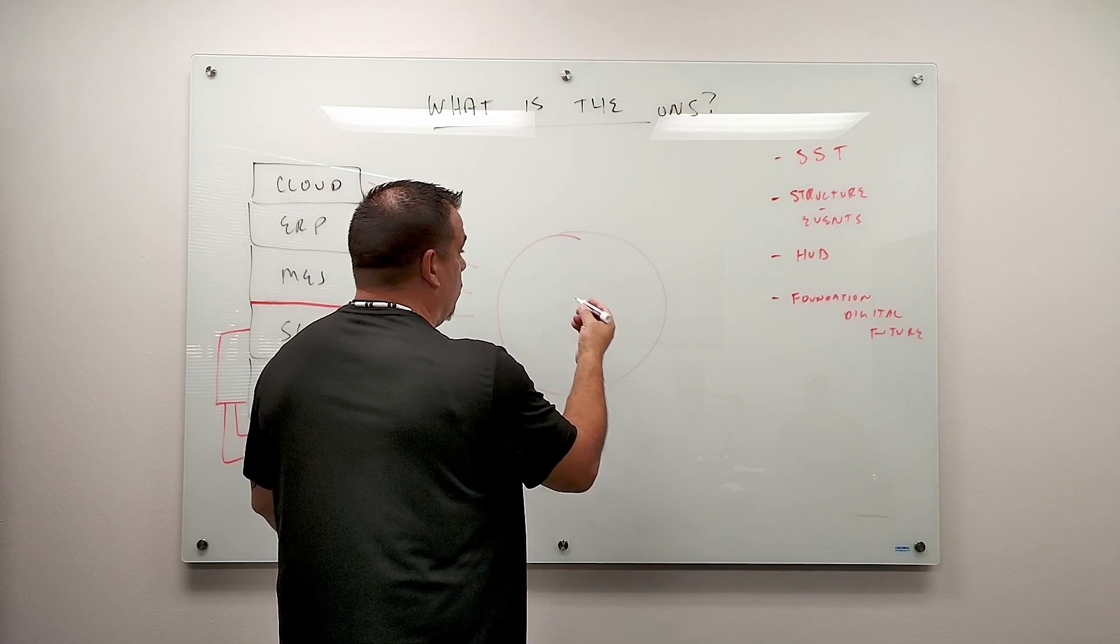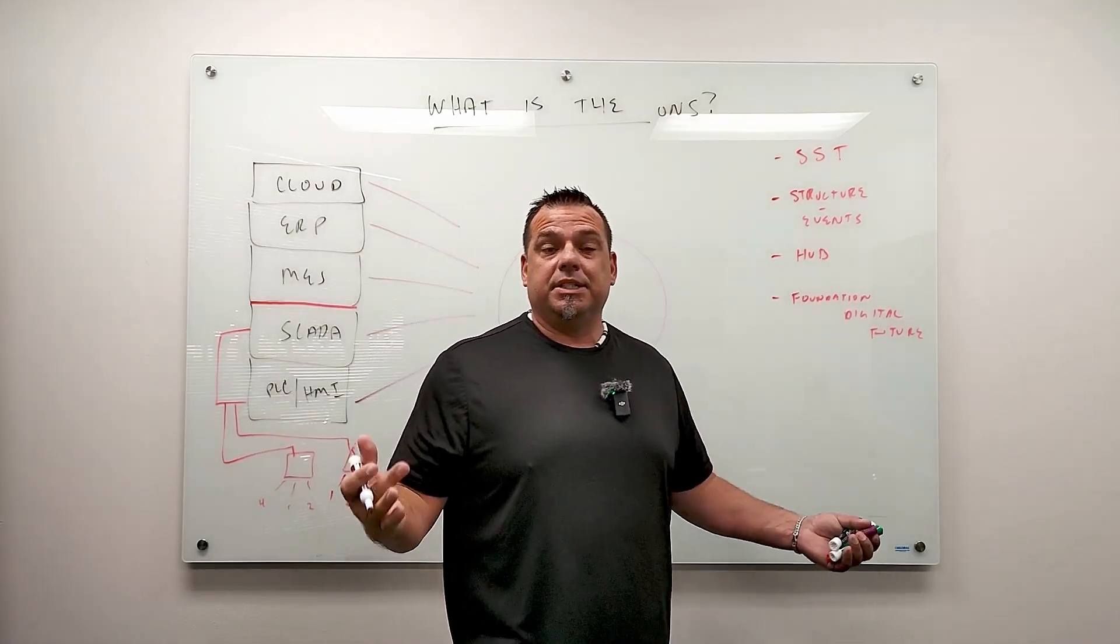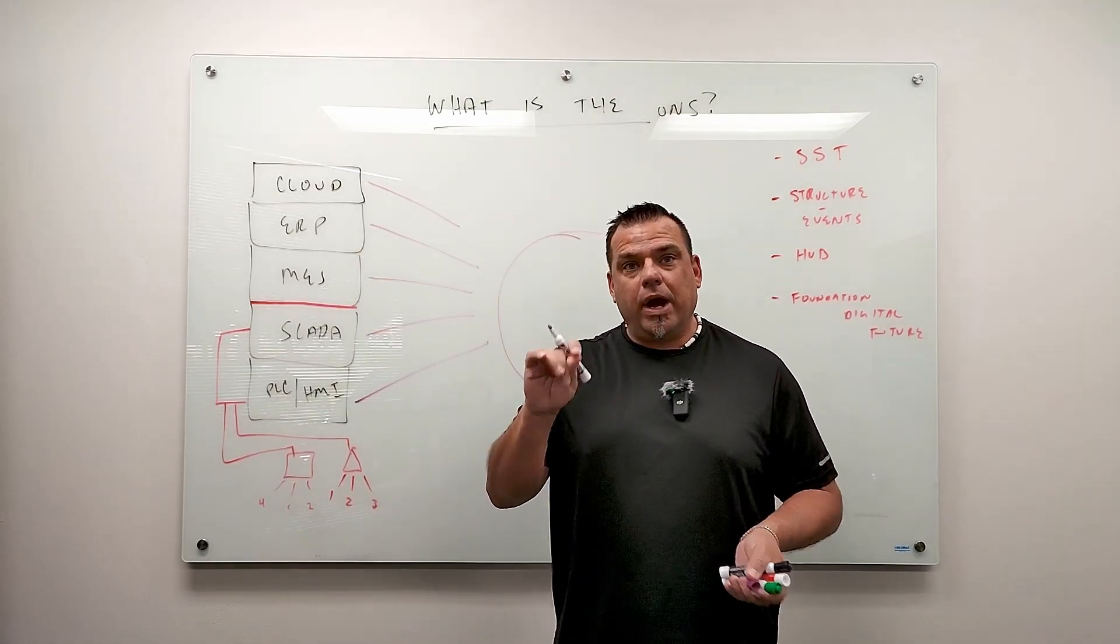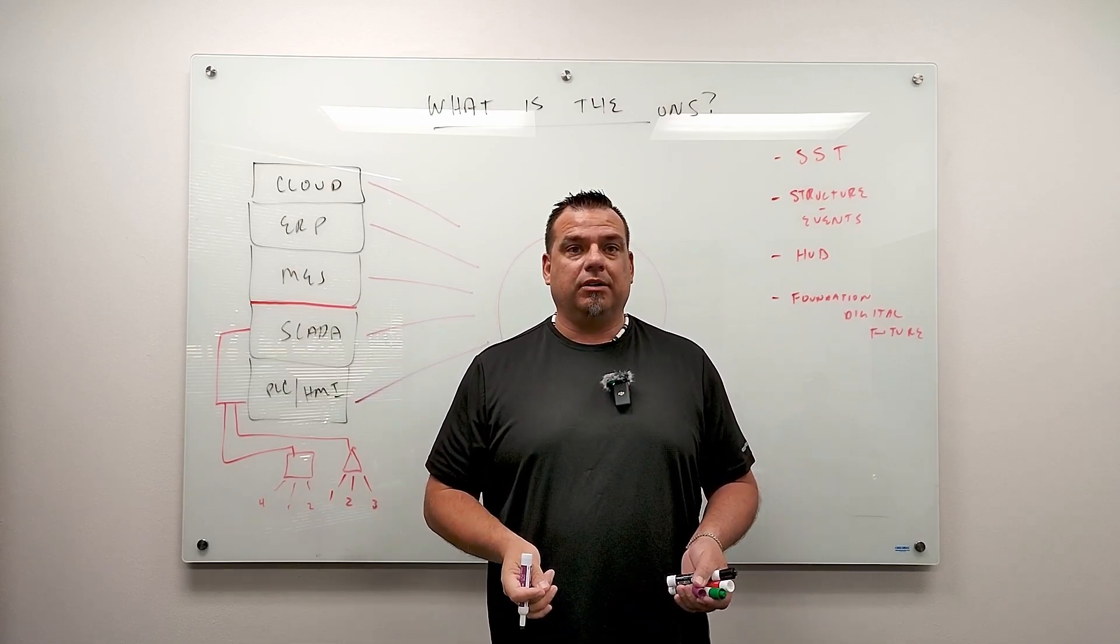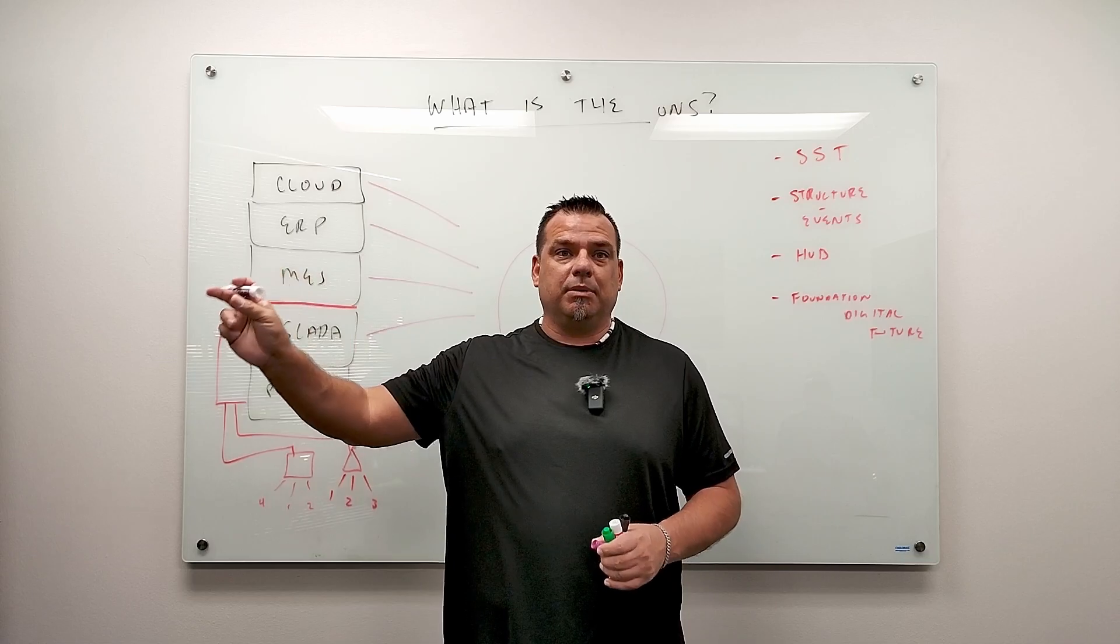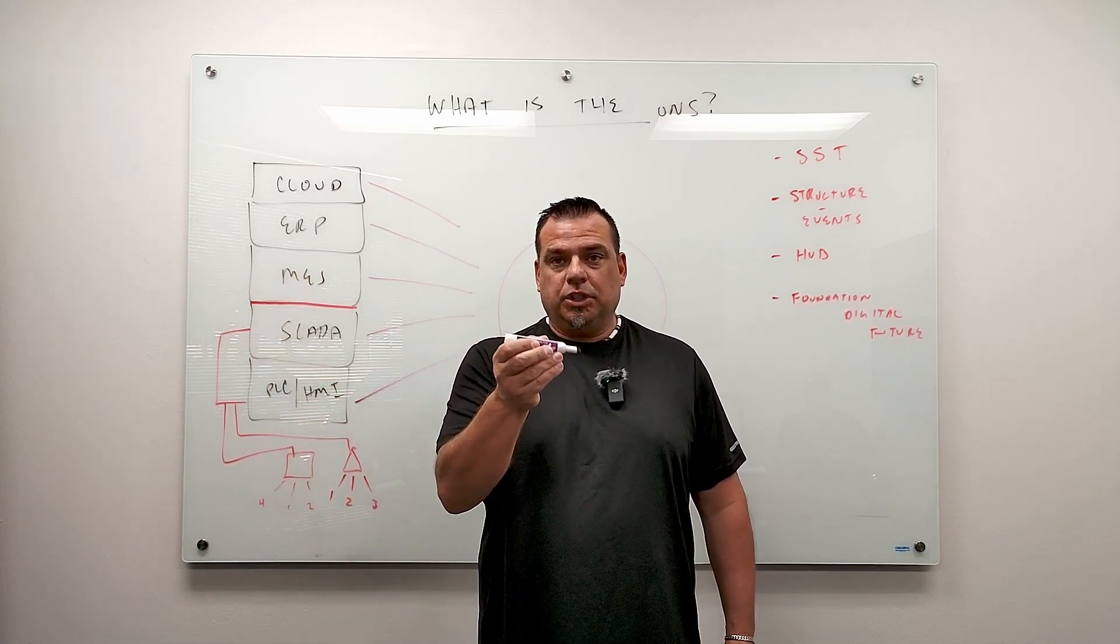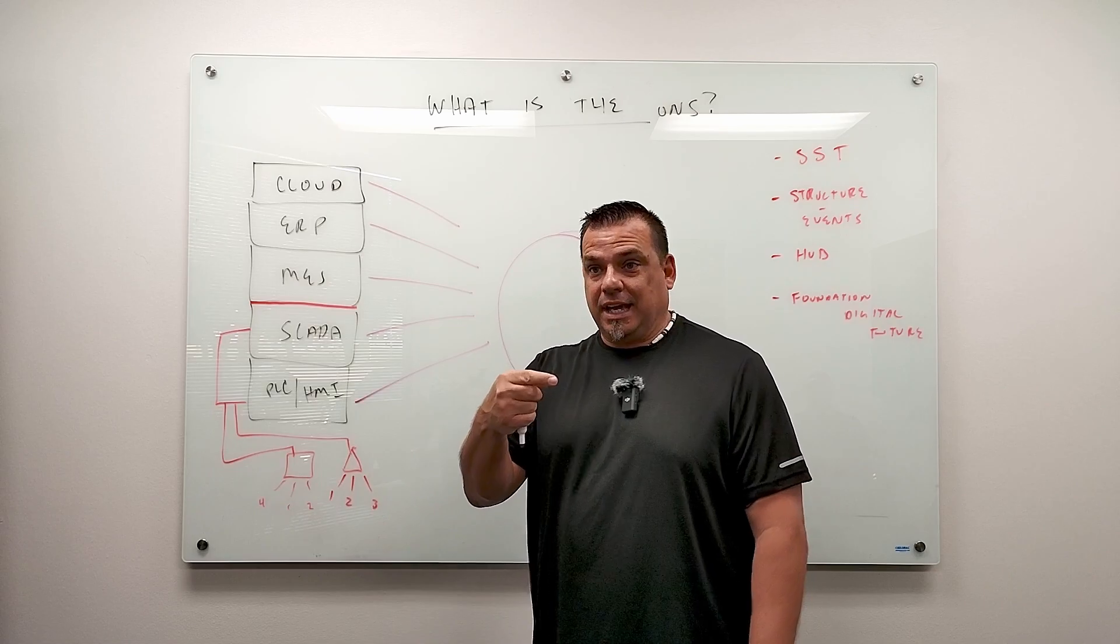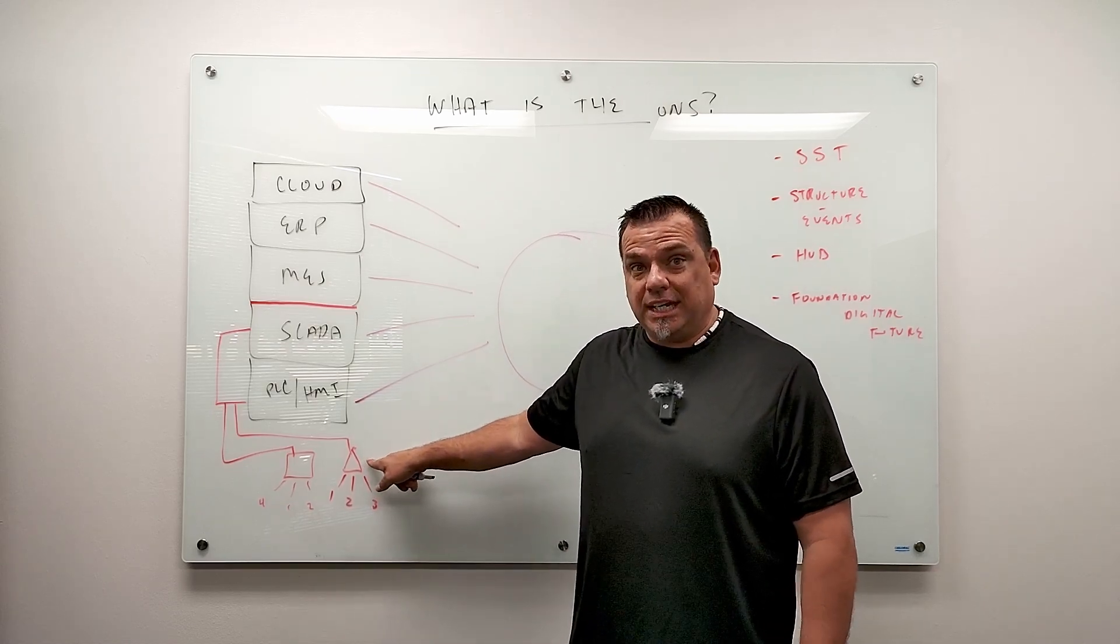Okay. Number two, the structure and the events. So we organize, we have to organize the business somehow. How do I know where to go to get the data point I care about? Does someone have to put it on a piece of paper and say the data point that you want for your manufacturing execution system, which shows machine state in this triangle here.